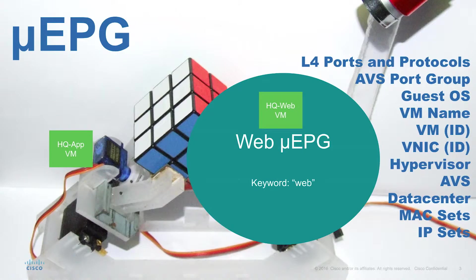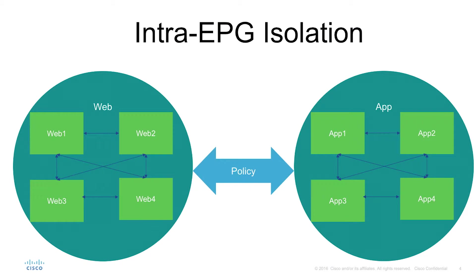We can use any of the attributes listed to the right on this slide. We also have intra-EPG isolation, which is achieved by using a config flag in the EPG that can be set on the APIC. It's called preferred policy control.